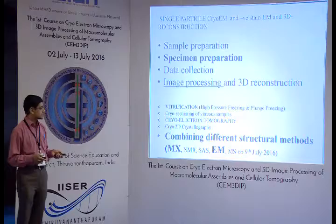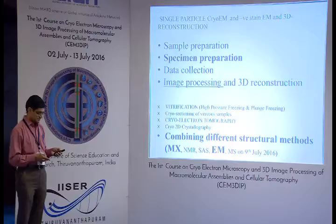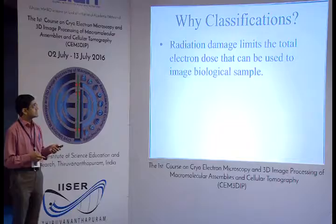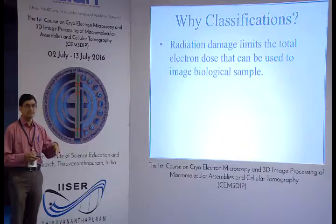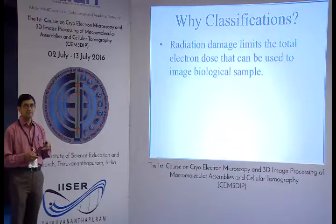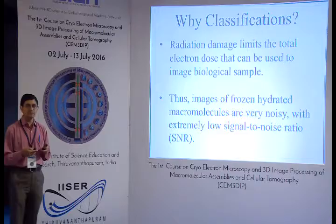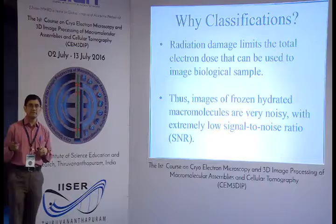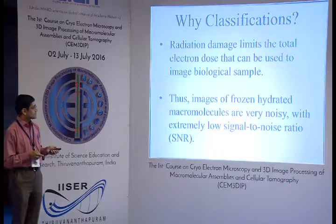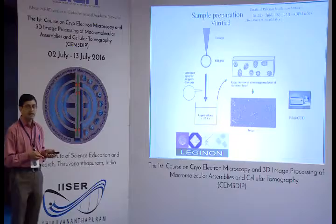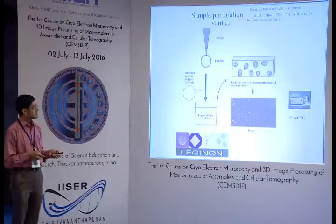Classification is important due to signal-to-noise ratio. The signal-to-noise ratio is low because radiation damage limits the total electron dose, and because of this we do a low-dose data collection. When you do a low-dose data collection the signal-to-noise ratio is weak, so we need to improve it. We combine 10 to 15 particles in one class so that you see class sums, which is what you are choosing in the EM practicals. Images of frozen hydrated macromolecules are very noisy with extremely low signal-to-noise ratio — that's the reason why we do classification.